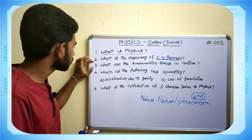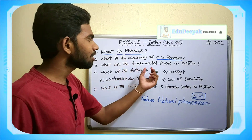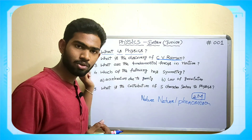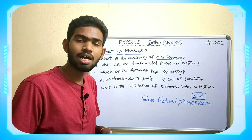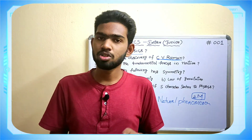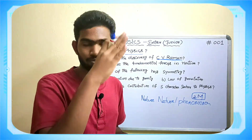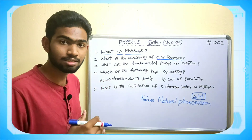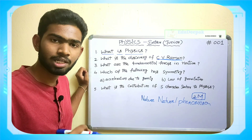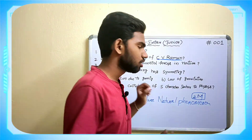Now the third question: Fundamental forces in nature. The four fundamental forces in nature are: gravitational force, electromagnetic force, strong nuclear force, and weak nuclear force. Gravitational force is the attraction from Earth to objects, acting downward. By writing these four forces, we can get two out of two marks for this question.